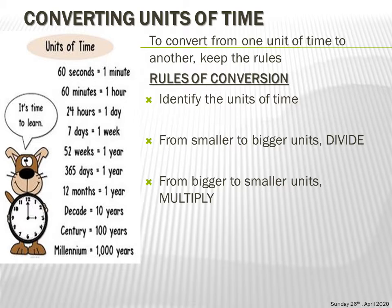For example, if you are told to convert 50 minutes to seconds, the two units of time in the question are minutes and seconds. You go to the units of time chart and find where minutes and seconds appear together — that gives us: 60 seconds make one minute. Once you know that rule of conversion, check the next step.